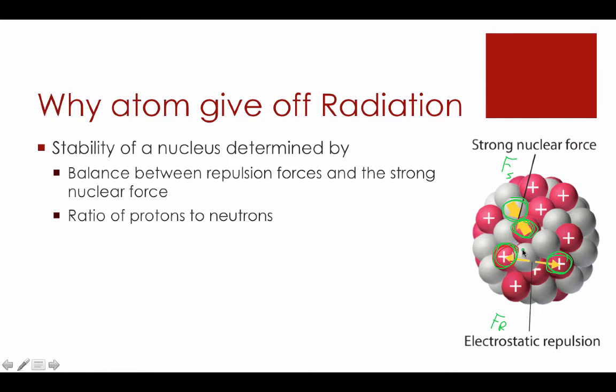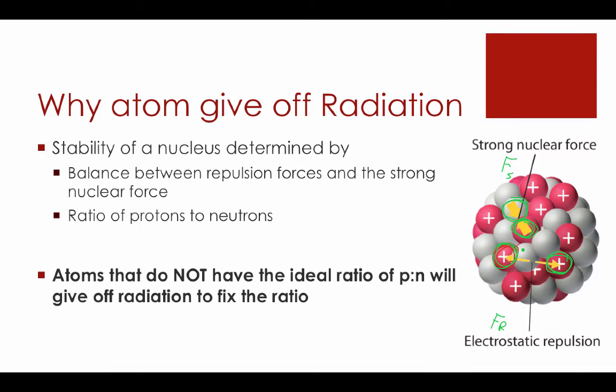When these forces are in balance, the atom is stable. When they're not, the atom is unstable and gives off radiation. So that stability, then, is determined not just by the forces, but by the ratio of protons to neutrons. When you have the right number of protons to neutrons, we get the right balance of force. Anything that's not that ideal ratio is going to result in the release of radiation to change the number of neutrons and protons so we get back closer to that ideal ratio and those balance forces.